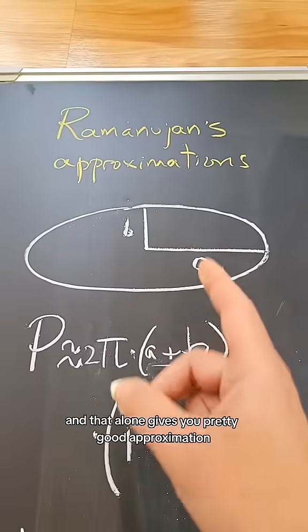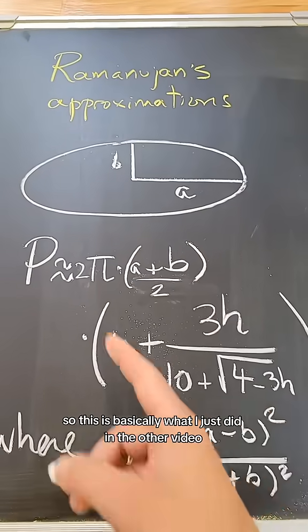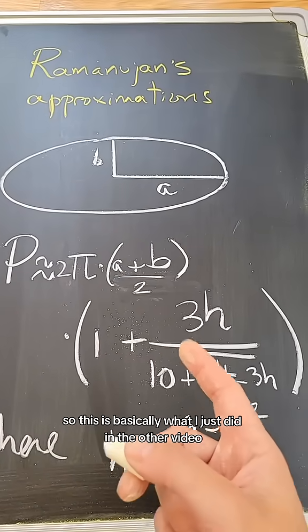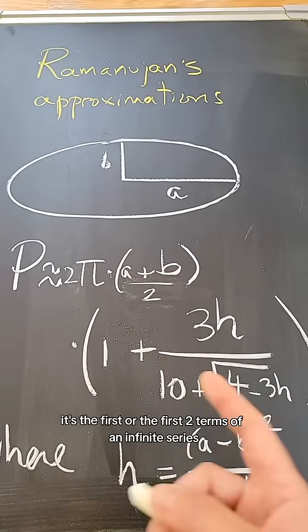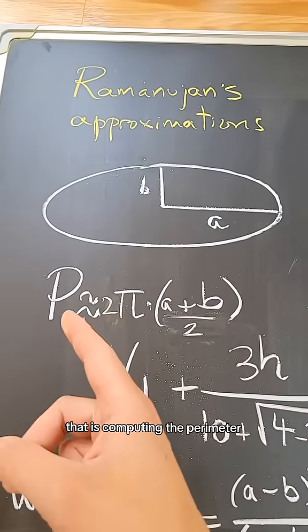And that alone gives you a pretty good approximation. So this is basically what I just did in the other video—it's the first or the first two terms of an infinite series that computes the perimeter.